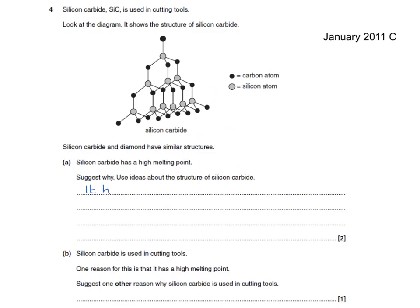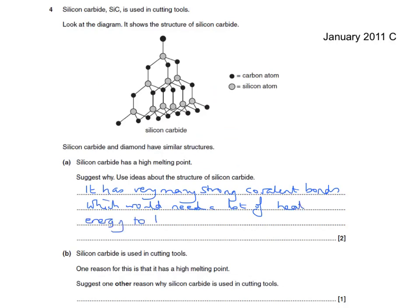It has very many strong covalent bonds, which would need a lot of heat energy to break. Secondly, silicon carbide is used in cutting tools - one reason being its high melting point. Another reason why silicon carbide is used in cutting tools is that it is hard, and again this is because of the strong covalent bonds within its structure.